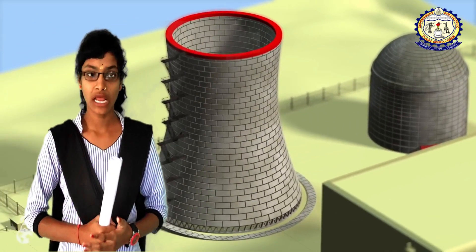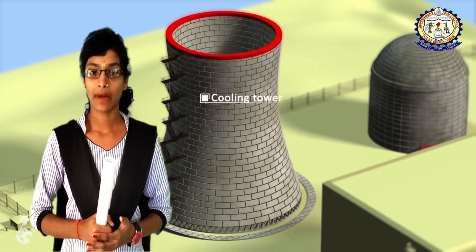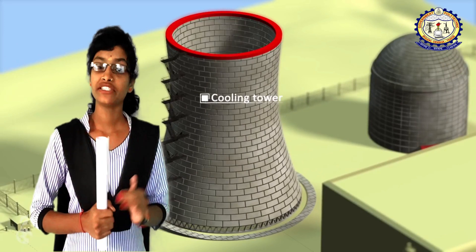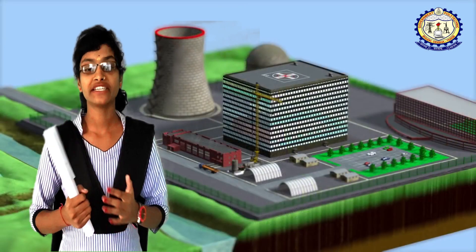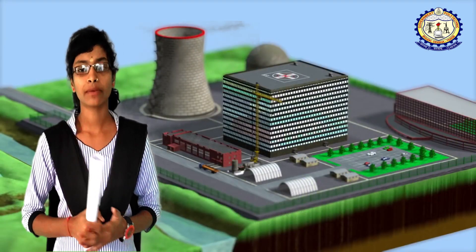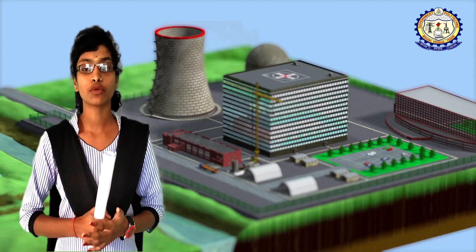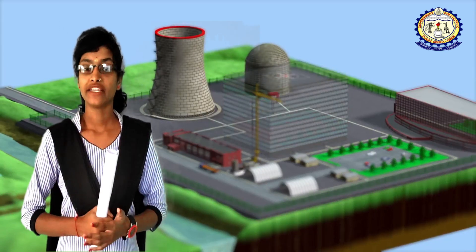The main difference between the nuclear power plant and thermal power plant: thermal power plant gets heat by burning coal or fuel. Nuclear power plant produces heat from turbine and uranium.